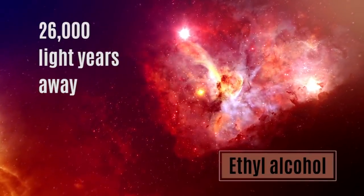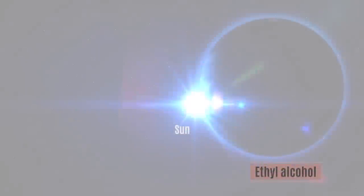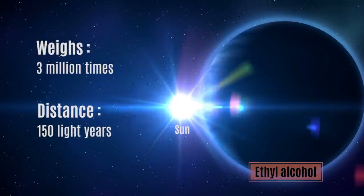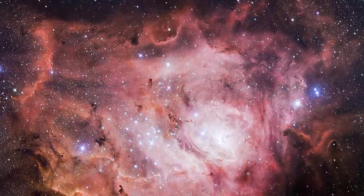Somewhere near the center of our galaxy, about 26,000 light years away from us, lies a massive, dense, molecular cloud of gas and dust. It weighs about 3 million times the mass of our Sun and spans a distance of 150 light years. What makes this giant cloud really interesting is what it contains. Scientists say it will taste like raspberries and smell like rum.